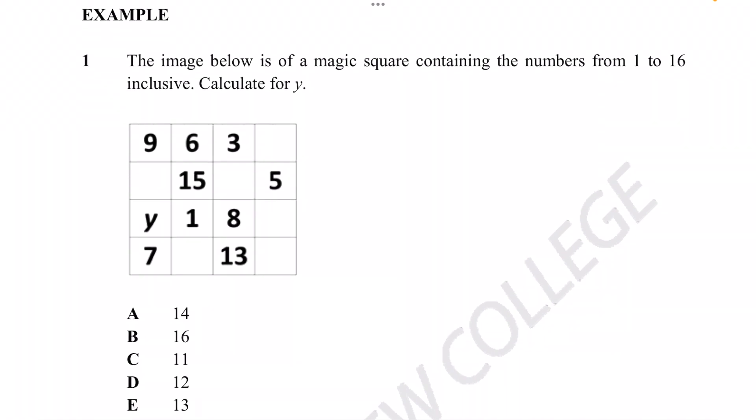In this example, the image below is that of a magic square containing the numbers from 1 to 16 inclusive. Calculate for y. Firstly, let's remember the formula for the magic constant. The magic constant is n times n squared plus 1 divided by 2.